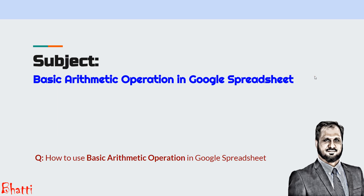Assalamu alaikum. Today we will see the basic arithmetic operations in Google Spreadsheet. The basic arithmetic operations are very simple: addition, subtraction, multiplication, and division. Let us see how to use them all in Google Spreadsheet.